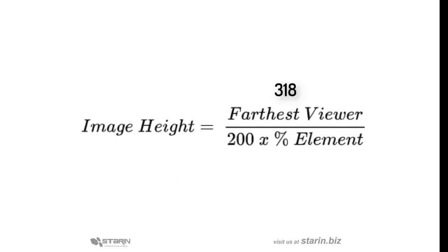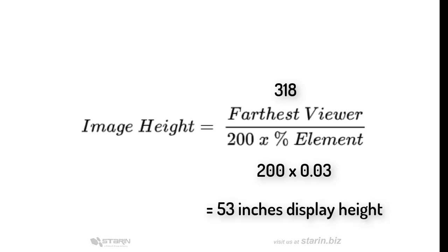Next, we'll divide 318 inch viewing distance by the product of 200 times 0.03 or 3% to get 53 inches of image height. A 53 inch 16:9 display is 108 inch diagonal.